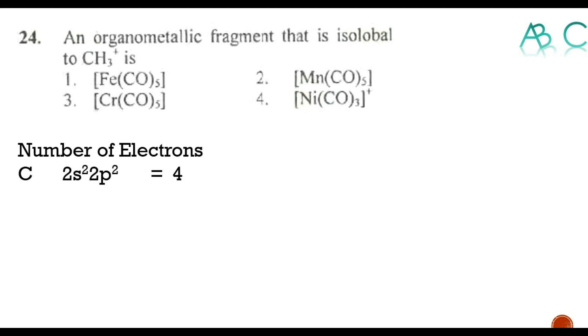Now going to our question, we have to check the isolobal species. First we calculate: for carbon, the number of valence electrons are 2s2 2p2 so four electrons. For hydrogen 1s1, so one electron.